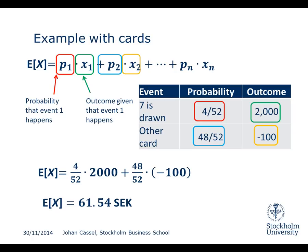We also observed that the only two possible outcomes are that either you win 2,000 or you lose 100, so this expected value could never actually happen when we played the game. It was instead the average if you played the game many, many times. We also had the Pn times xn term in the formula, where n stands for the total number of different events we have.